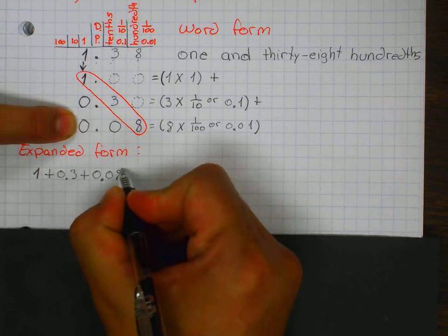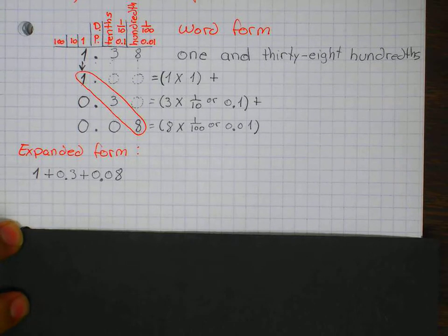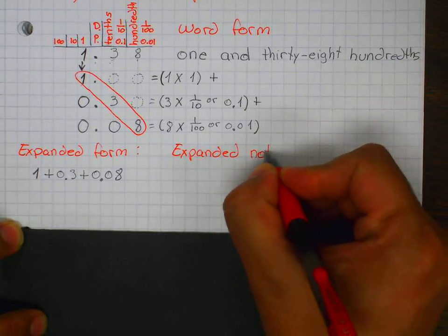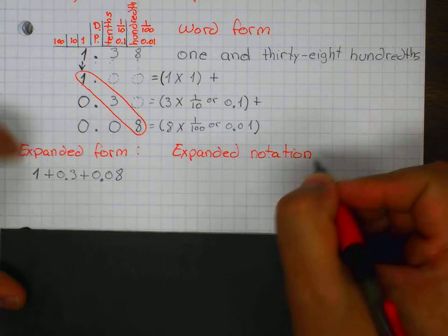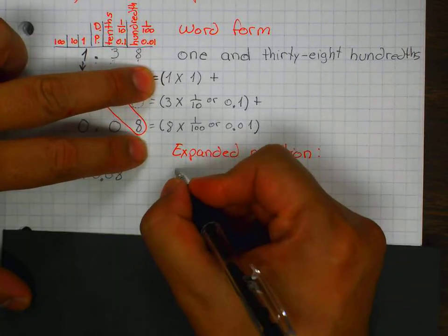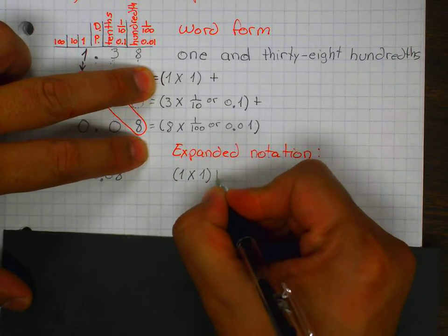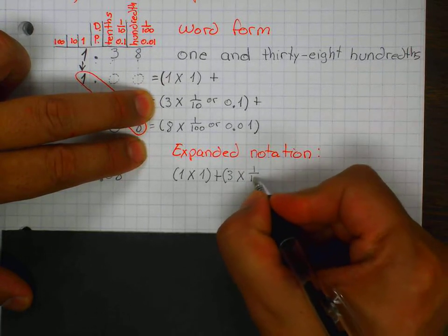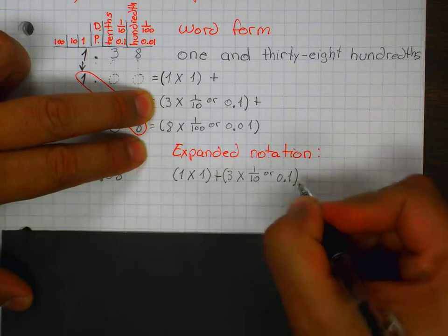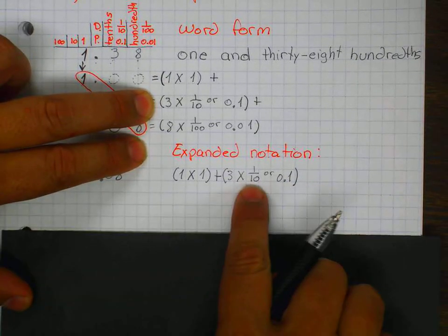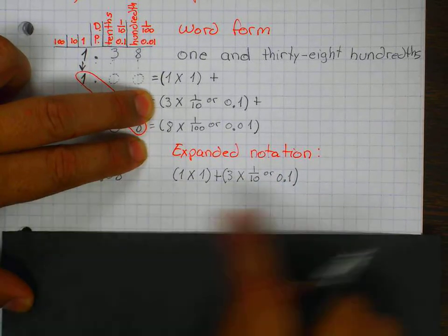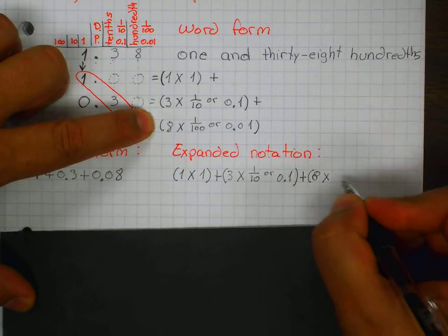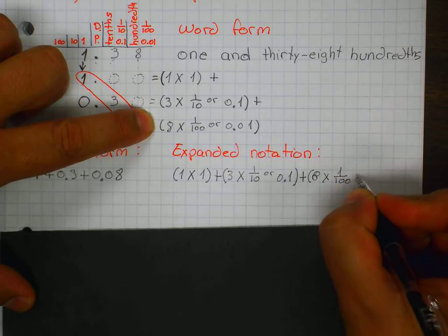My expanded notation is one times one, plus three times one-tenth as a fraction or as a decimal, plus eight times one-hundredth as a fraction or one-hundredth as a decimal number. I'm writing both because we don't know how it's going to be presented on the test — they could give me the fraction or they could give me the decimal number. That's why I'm writing both.